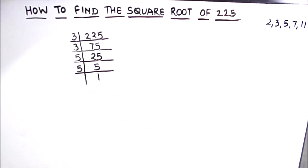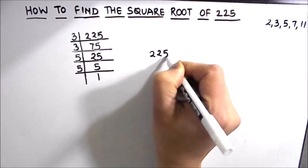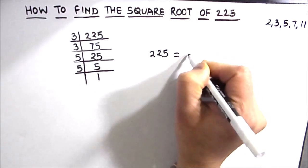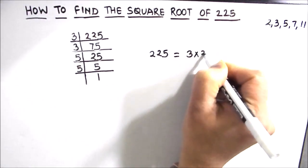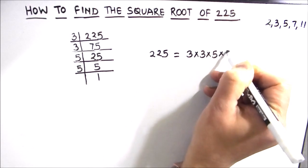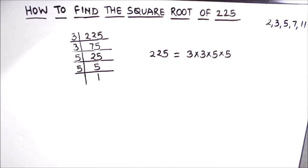Now we got the factors of the number. We can write it as the product of the factors. So 3 times 3 times 5 times 5 are the factors of the number.